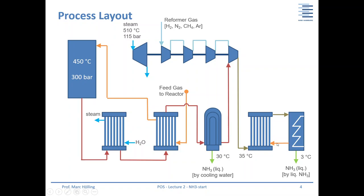The internal heat exchanger here ensures that if the outlet temperature is three degrees Celsius, you can pre-cool the recycle gas so you don't have to cool it all the way from 35 degrees to three degrees in one step — instead you use an intermediate temperature level, which improves the energy efficiency of the process. After this, the loop is almost closed, with a feed temperature to the reactor of 15 degrees Celsius.